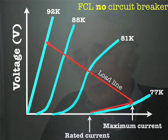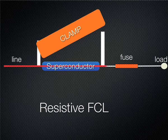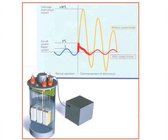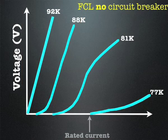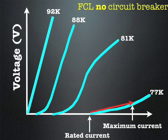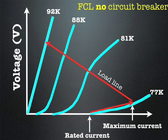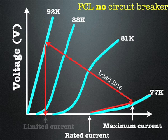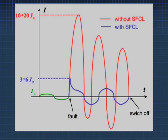We start off not on the load line because the material is superconducting. As soon as we get a short circuit and a fault, we go up the VI characteristic until we reach the load line. At that point it's heating up very rapidly, so it moves back along the load line along the curves of gradually increasing temperature until it reaches the normal state. It may go higher, but the resistance won't change so much after that. Once it reaches the normal state, the current below that is the current at which it stabilizes.